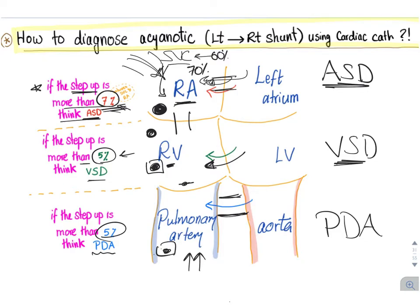To summarize the thresholds: ASD requires a step-up of 7%, while VSD and PDA each require 5% — so seven, five, five. The reason blood shunts from left to right is that the pressure on the left side of the heart is greater than on the right side.